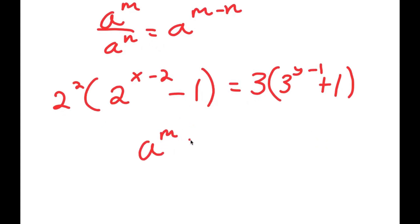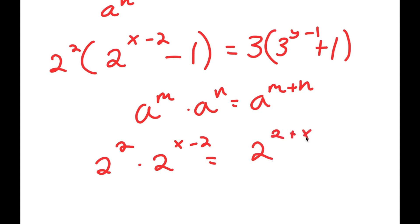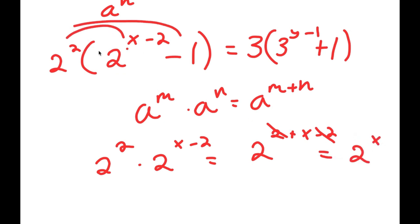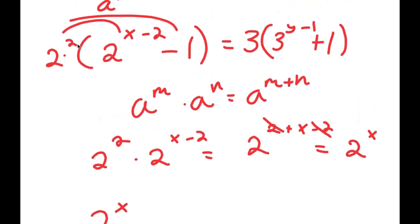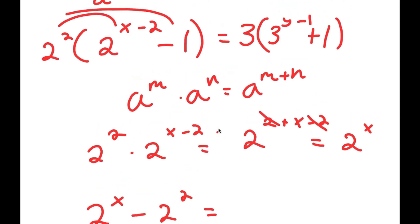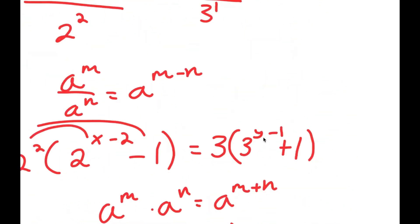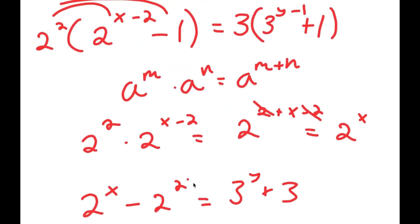Using the rule that a to the power of m times a to the power of n equals a to the power of m plus n, I have 2 squared times 2 to the power of x minus 2, which equals 2 to the power of 2 plus x minus 2. The 2 and negative 2 cancel, giving 2 to the power of x. So 2 squared times 2 to the power of x minus 2 is 2 to the power of x, and I have 2 squared times negative 1, which is negative 2 squared. This equals 3 to the power of y plus 3, verifying our distribution.